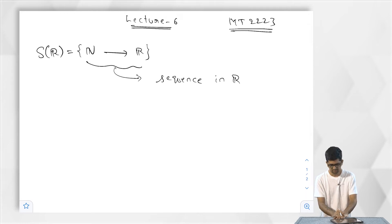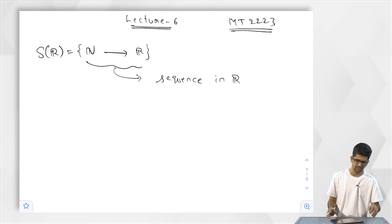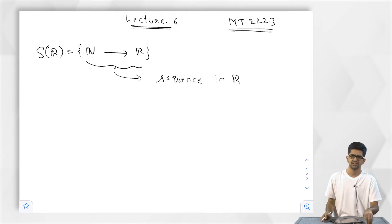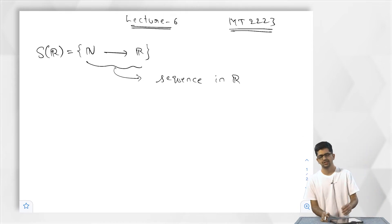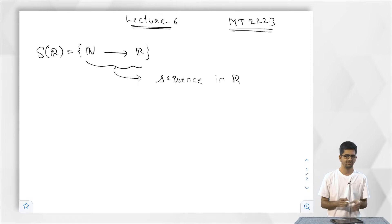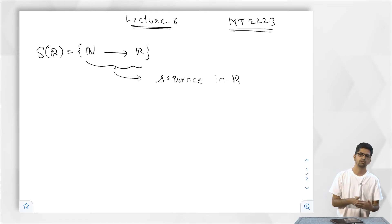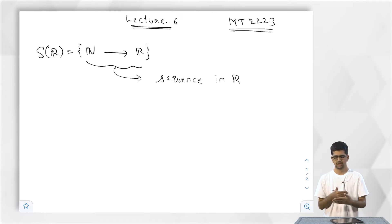The field structure on R — the addition, multiplication, additive inverse, multiplicative inverse — they induce structure on SR. I mentioned in the last session about the sum of two sequences, product of two sequences, additive inverse of a sequence, and multiplicative inverse of a sequence that is nonzero.